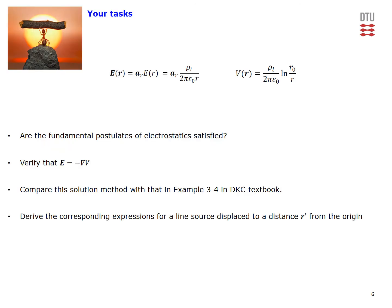We are now done with the main tasks. For practice: verify that the derived expressions satisfy the fundamental postulates of electrostatics; verify that the electric field equals the negative gradient of the derived potential; compare this solution with example 3-4 in the textbook, which uses a more general approach for the line charge electric field; and derive the corresponding expressions for a line source displaced to a finite distance r-prime from the origin. Thank you very much for your attention.